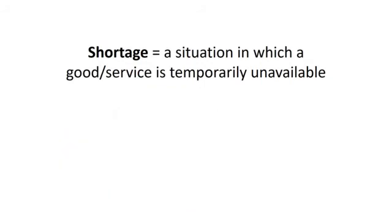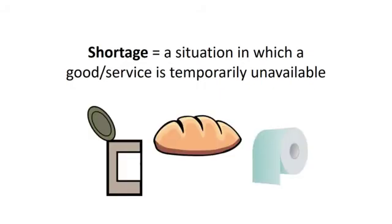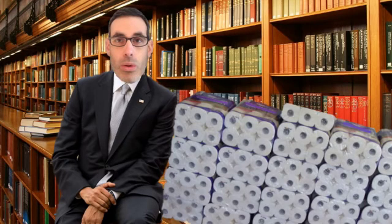If you've gone to the supermarket, you've probably seen shortages in other areas as well. Certain food products are suffering from shortages. When I went to the store the other day, there were no more cans of soup, the bread was in very short supply, and the toilet paper was all gone from the shelves. The important thing to remember about a shortage is that it's a temporary situation.